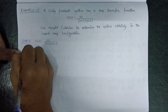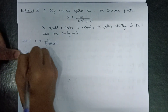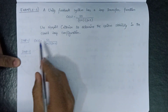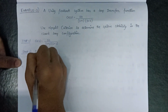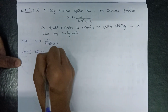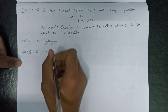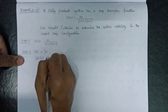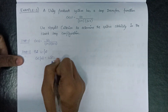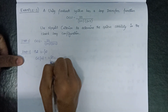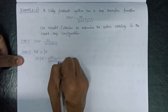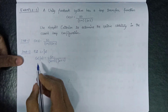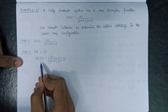Moving on to step number 2, in which we have to put s equals to jω. So substituting s equals jω, we get G(jω) equals 50 over (jω+1)(jω+2). This is the value of G(jω) in sinusoidal form.